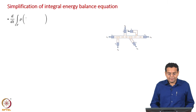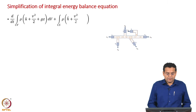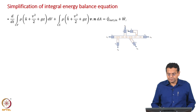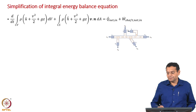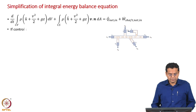Let us write down the complete integral energy balance equation: internal energy in the transient term, enthalpy in the convection term. On the right hand side we have the rate of heat addition term and then the rate of shaft work term.